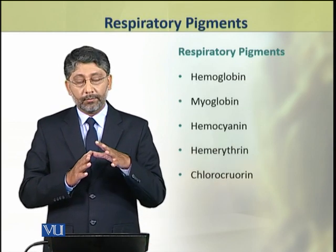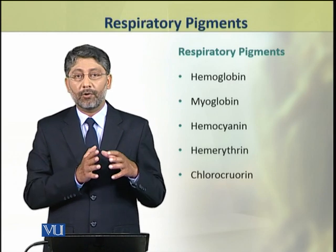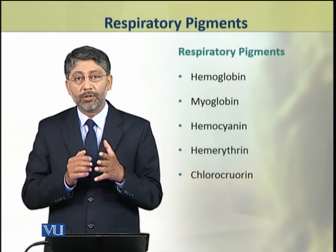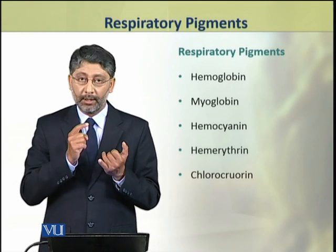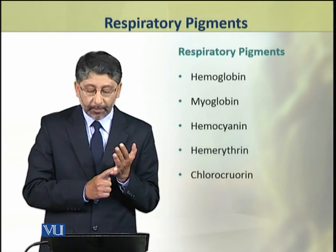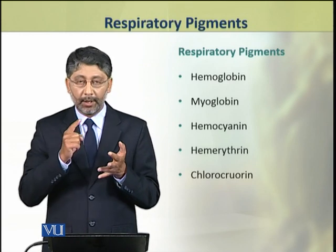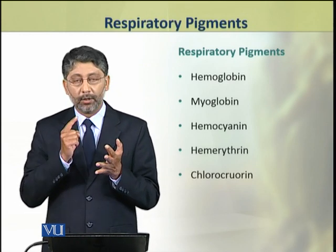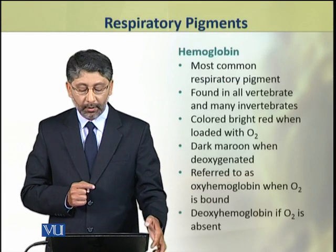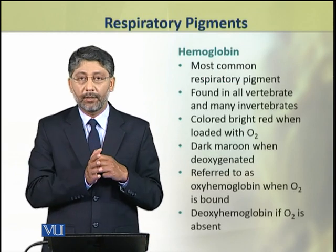There are many types of respiratory pigments found in the animal kingdom. The most common are hemoglobin, myoglobin, hemocyanin, hemerythrin, and chlorocruorin. We shall discuss these pigments one by one.